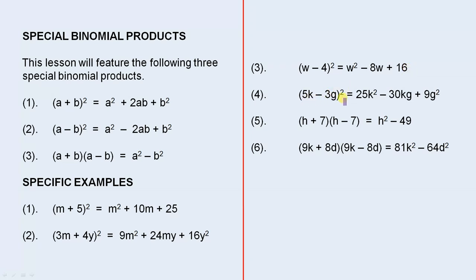If we square the first term we get 25k². Multiply them together to give you 15kg. Double it to give you 30kg. And square the last term which gives you 9g².